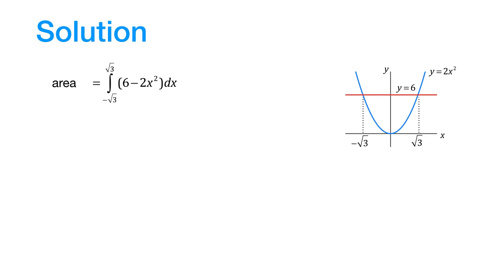Now this is an even function. So we can write it down as twice the integral of 6 minus 2x squared from 0 to root 3.